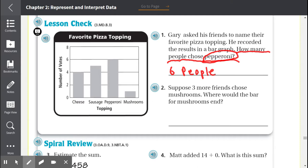Number 2, suppose 3 more friends chose mushrooms. Where would the bar for mushrooms end? So right now only one person chose mushrooms, but if 3 more, 1 plus 3 equals 4. So we would shade mushrooms up until we got to 4. And mushroom would end at 4.